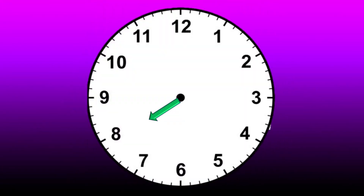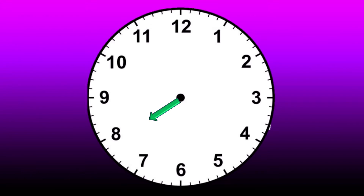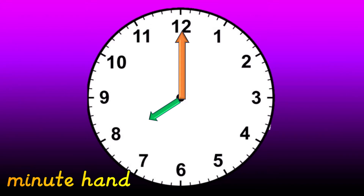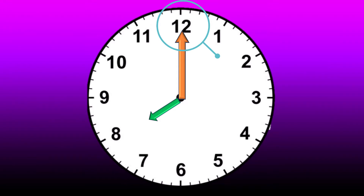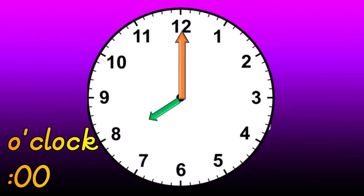The short hand on a clock is called the hour hand. It tells which hour it is. The long hand is the minute hand. Here's a little secret: whenever the minute hand is on the twelve, we say 'o'clock.'